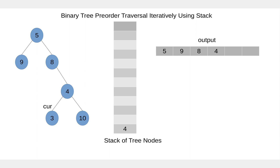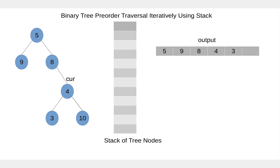Node 3 is not null, so we add 3 to the output, add 3 to the stack, and move to its left child. Current node is null, so we pop the node from the stack and move to the right child of 3. Current node is again null, so we pop from the stack and move to the right child of 4.